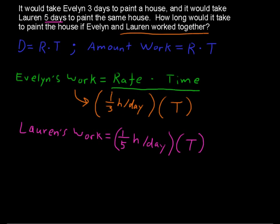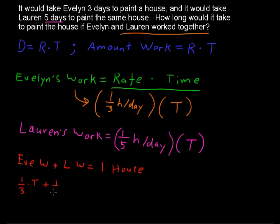So we've got Evelyn's work and Lauren's work. Evelyn's work plus Lauren's work will equal one house. So if I add one-third times t plus one-fifth times t, we should get one house.